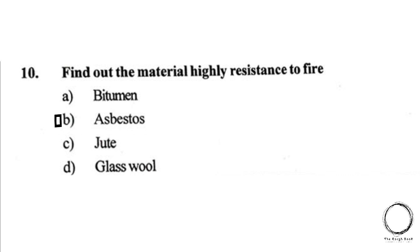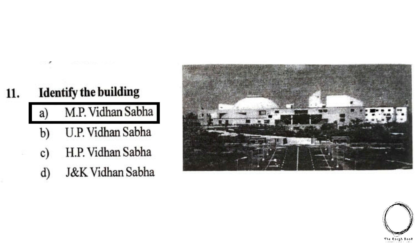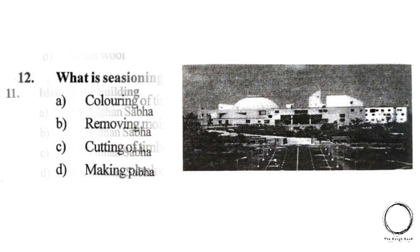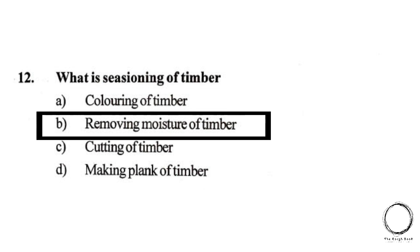Identify the building shown in the image: A) MP Vidhan Sabha, B) UP Vidhan Sabha, C) HP Vidhan Sabha, D) JK Vidhan Sabha. The right answer is A, MP Vidhan Sabha. Moving on: what is seasoning of timber? Options: A) Coloring of timber, B) Removing moisture from timber, C) Cutting of timber, D) Making planks of timber. The right answer is B, removing moisture from timber.